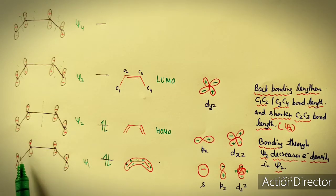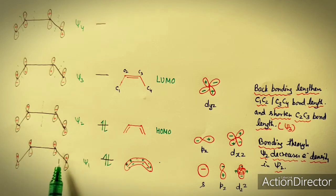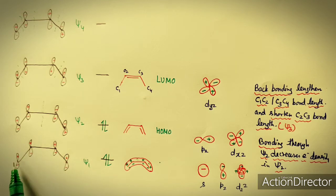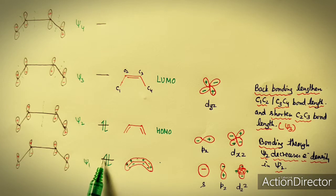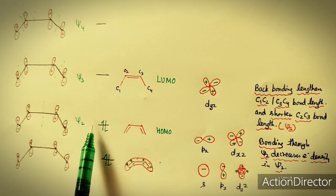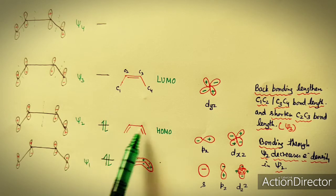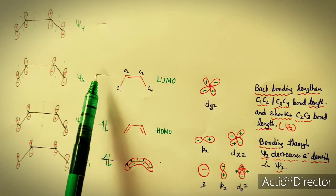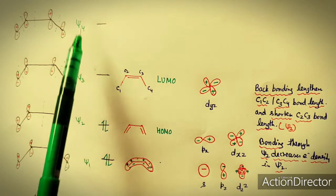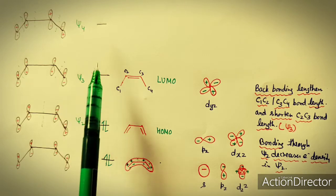There are four electrons — one per p orbital on each of the four carbon atoms. These four pi electrons fill psi 1 and psi 2. So psi 2 is the HOMO and psi 3 is the LUMO. Butadiene has two empty antibonding molecular orbitals (psi 3 and psi 4).